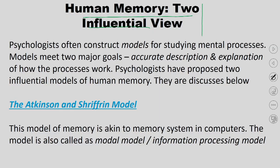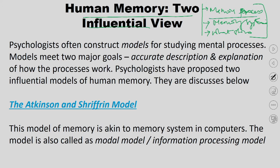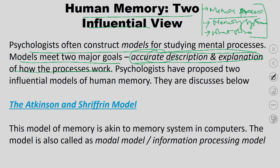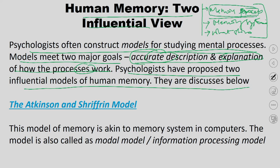Our study of memory will focus on three things: first, the process of memory; second, memory systems — how many types of memory there are; and third, what is stored in memory. Let us start with the process of memory. Psychologists construct models for studying mental processes — models that provide an accurate description and explanation of how processes work. Two influential models of human memory have been proposed, which we will discuss in the context of the Atkinson-Shiffrin model and the network model.